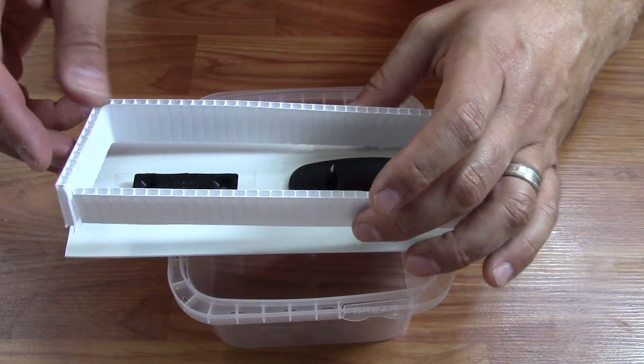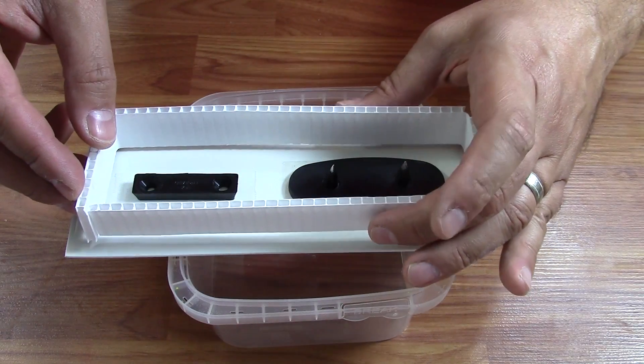Next we'll assemble our mold box and seal it up with a little hot melt glue.